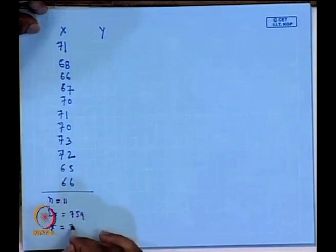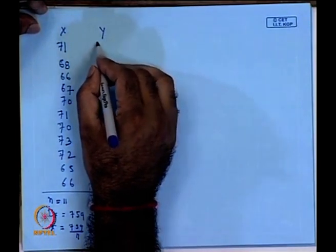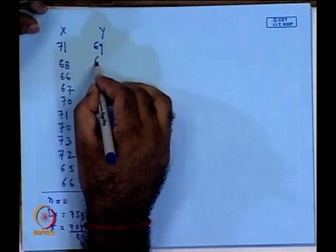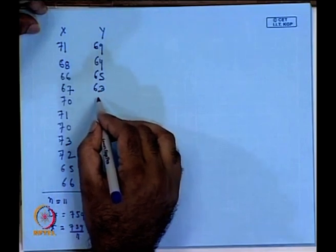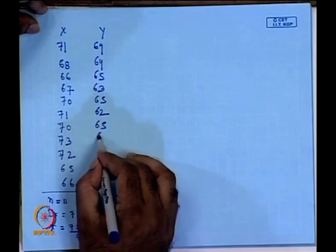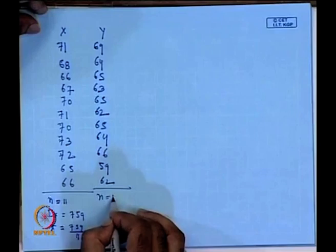Now the y series: 69, 64, 65, 63, 65, 62, 65, 64, 66, 56, 59, 62 — wait, n is 11. Because for variance, covariance, correlation, and regression, the essential condition is that sample observations must be the same for both variables. The sum of y equals 704, so ȳ = 704/11 = 64.